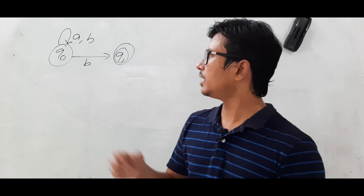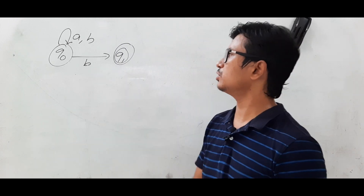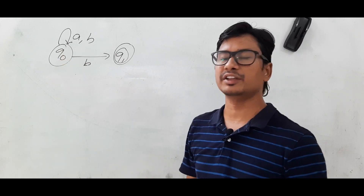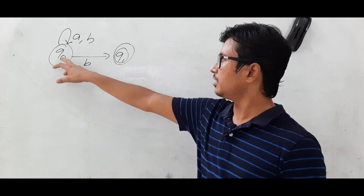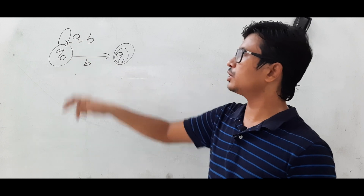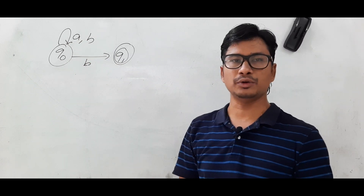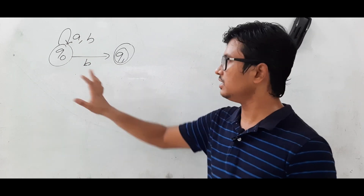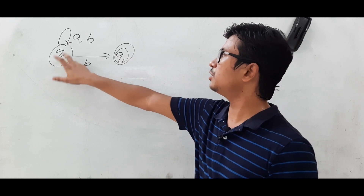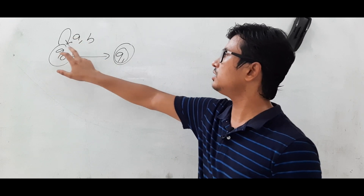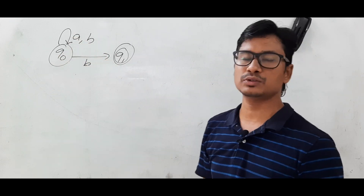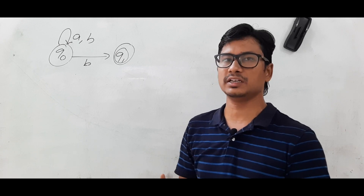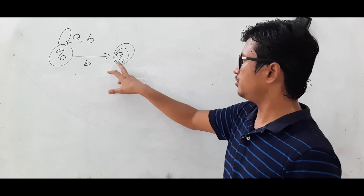Let me check the question — there are two states. We will check whether it is an NFA or DFA. Q0 on B is going to Q0 and Q1, so I can say that it is an NFA. Q0 on B goes to more than one state, so it is an NFA.